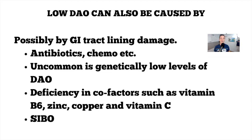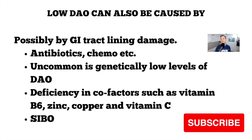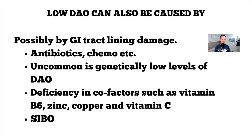You can also have low DAO because your GI tract lining is damaged — antibiotics and chemotherapy can damage that lining. It's very uncommon to have a genetically low level of DAO. Deficiency in cofactors like vitamin B6, zinc, copper, and vitamin C can reduce DAO. And small intestinal bacterial overgrowth can be an issue because your body is competing with the bacteria for resources.